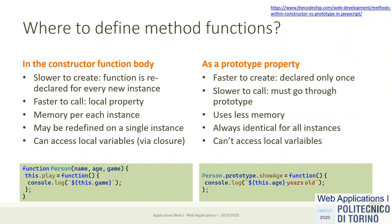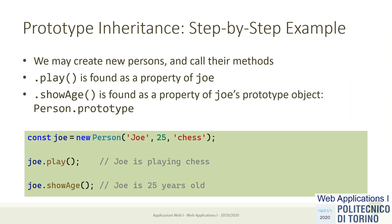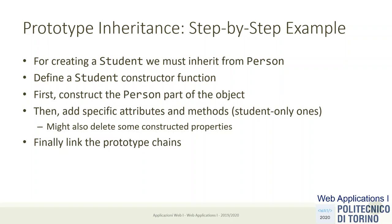Now we want to create a subclass — a `Student` constructor function whose objects inherit from `Person`. We must define a new constructor that first constructs a person object, then adds attributes specific to students. We also need to ensure the prototype chains are correctly linked. Here are the three steps for creating a constructor function for a sub-object.